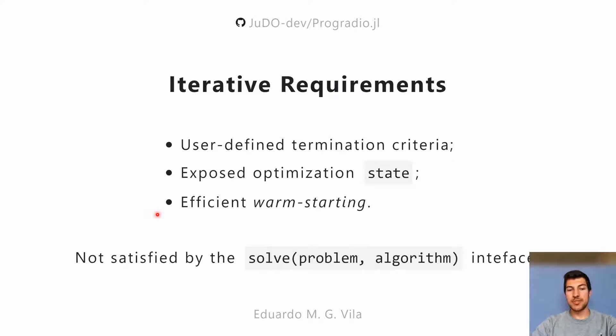These requirements are not really satisfied by the current state of the art, which is the common solve interface where we give a problem and an algorithm and we put it in the solve function and hope that we get a solution out of it. It is true that you can create callbacks, but in those cases you often have to recompute many quantities that you should already have computed. That's why we are looking for a different way of doing this optimization.